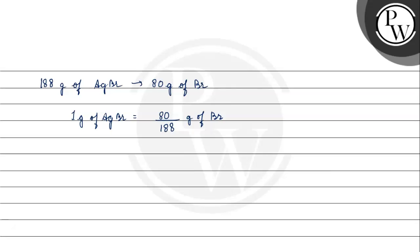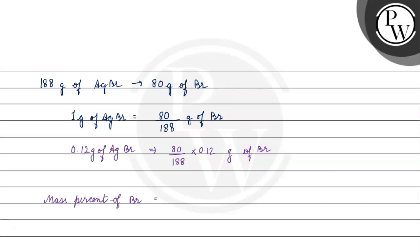Our question states we have 0.12 gram of AgBr. So the mass of bromine will be 80 divided by 188 multiplied by 0.12 gram of bromine. Now we need to calculate the mass percentage of bromine. The mass percentage of bromine equals mass of bromine divided by mass of organic compound, multiplied by 100.